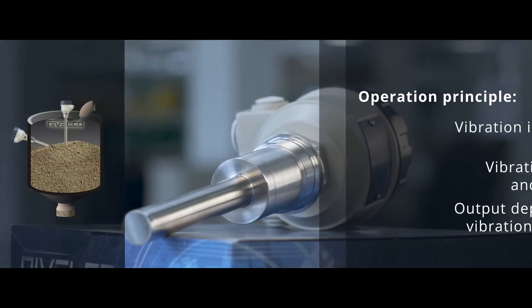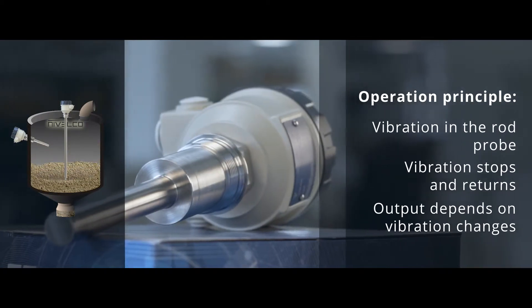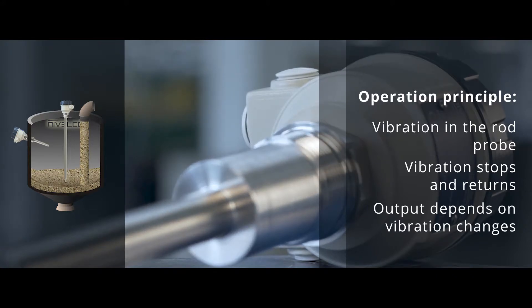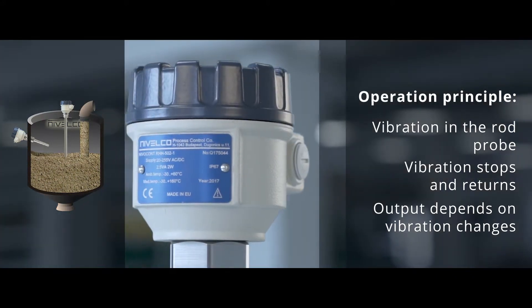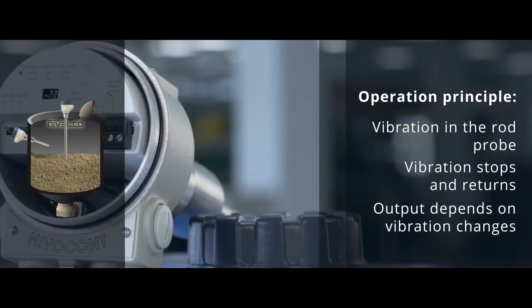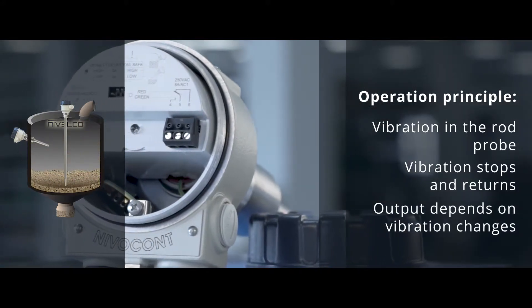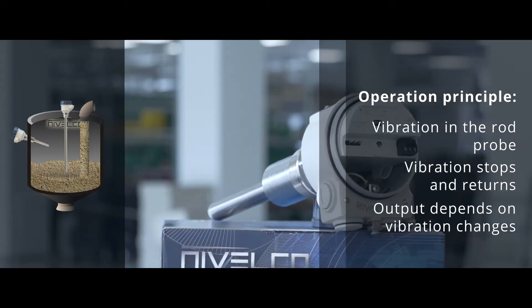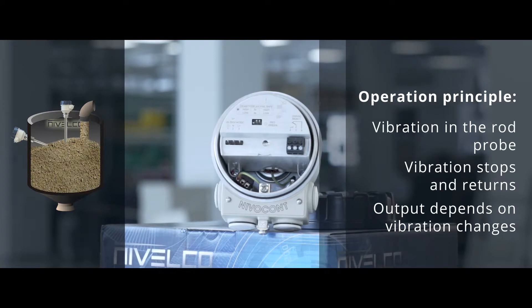Operating Principle. The electronic circuit excites a vibration in the rod probe. When the medium reaches and partially covers the rod, the vibration stops. When the material level falls, the medium leaves the rod and it returns to vibrate freely. The electronic senses the change of vibration and creates an output signal after a selected delay.